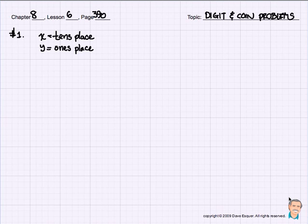Good morning, Chapter 8, Lesson 6, page 390. We're going to do some digit and coin problems. These can sometimes be confusing, but we're going to go slow and we'll be able to figure out exactly what they're asking us. Word problems can be confusing. Let's break things up into little pieces, and we can figure out what we need to do.